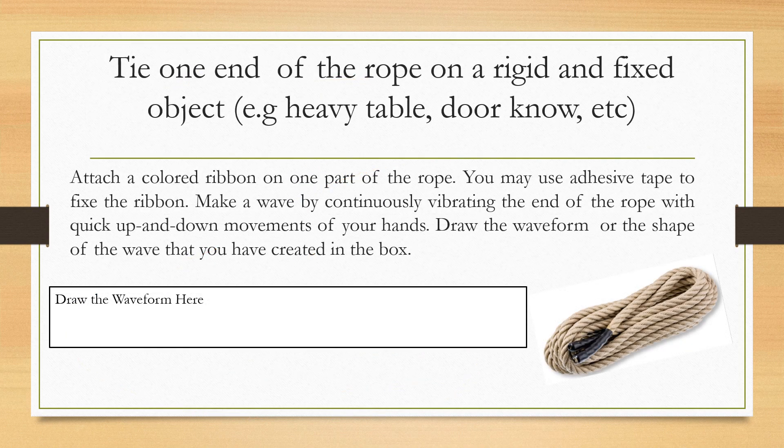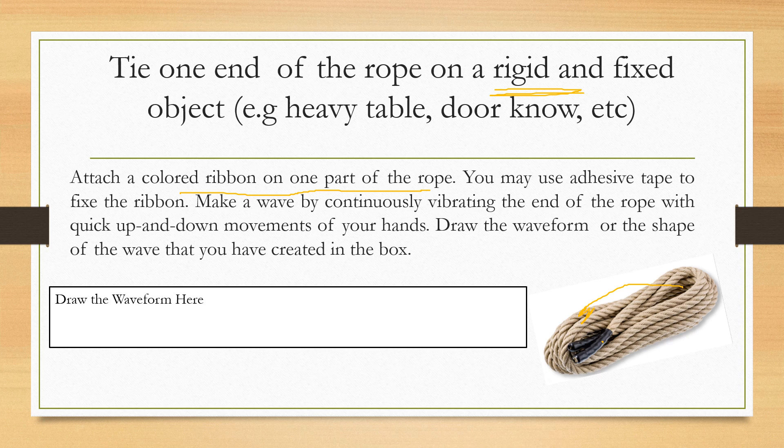Next, tie one end of the rope on a rigid and fixed object. Example, heavy table, doorknob, etc. This means the end of the rope will be tied to something heavy or rigid that cannot be removed. And then attach a colored ribbon on one part of the rope. You may use adhesive tape to fix the ribbon. Make a wave by continuously vibrating the end of the rope with quick up and down movements of your hands. Draw the waveform or shape of the wave that you have created in the box. Whatever you observed class, we need to draw it here.